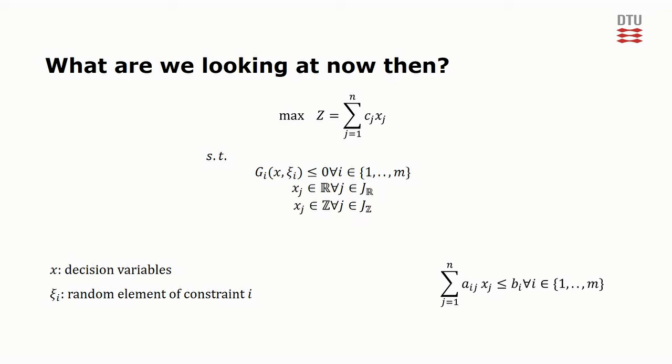Now the random ξ's follow a joint distribution, meaning that they are not independent. However, we assume that their distributions are known.